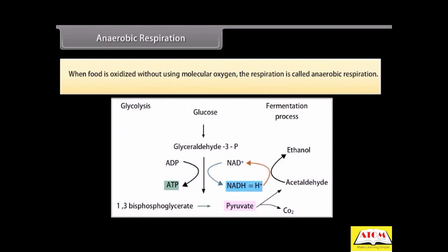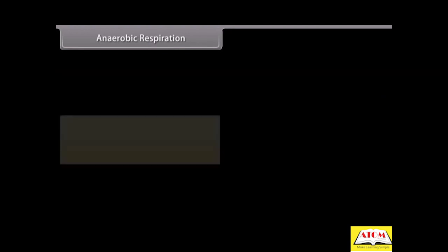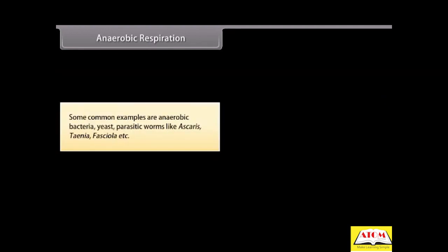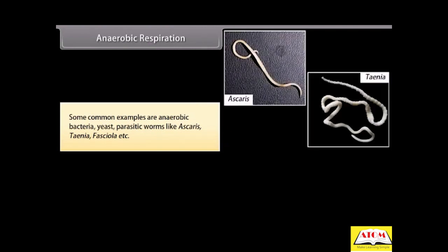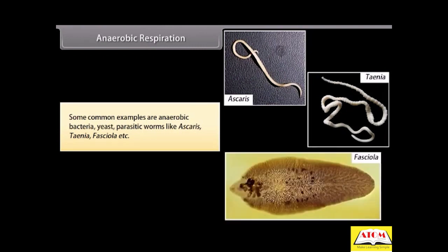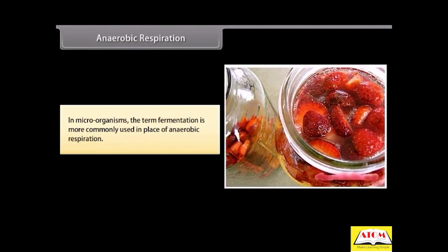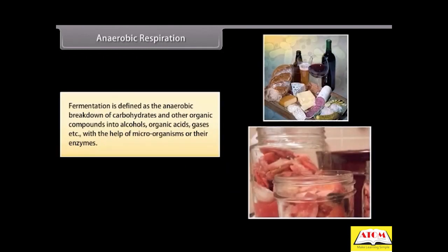When food is oxidized without using molecular oxygen, the respiration is called anaerobic respiration. Some common examples are anaerobic bacteria, yeast, and parasitic worms like Ascaris, Taenia, and Fasciola. In microorganisms, the term fermentation is more commonly used in place of anaerobic respiration. Fermentation is defined as the anaerobic breakdown of carbohydrates and other organic compounds into alcohols, organic acids, and gases with the help of microorganisms or their enzymes.